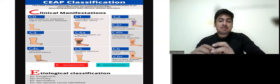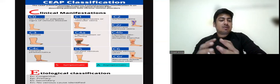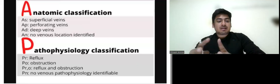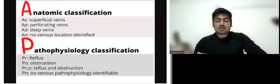So CEAP first of all stands for C for clinical manifestations, E for etiological classification, A for anatomical classification and P for pathophysiological classification.